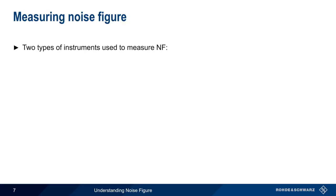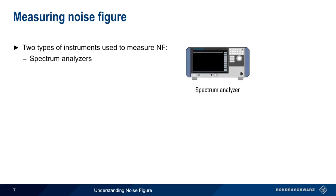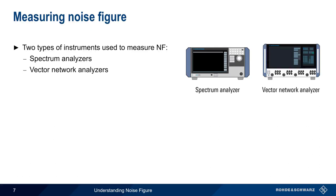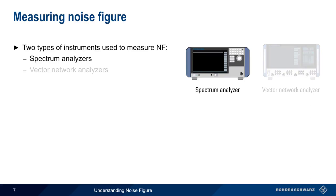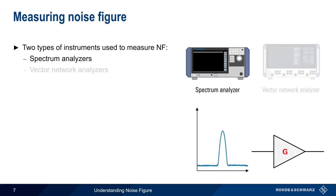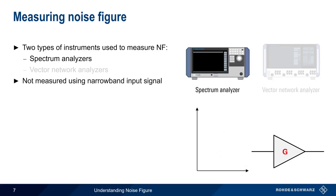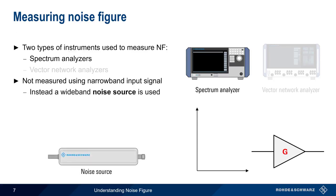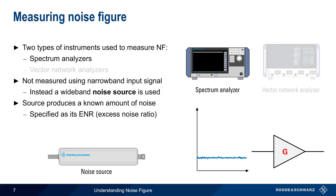Two different types of instruments are commonly used to measure noise figure, namely, spectrum analyzers and vector network analyzers. These instruments usually measure noise figure in different ways, and in this presentation, we'll only be covering how noise figure is measured using spectrum analyzers. Another important consideration in measuring noise figure is the DUT input signal. In our earlier explanation of noise figure, we used a narrowband signal, but this type of narrowband signal is not used when measuring noise figure. Instead, a special device called a noise source is used. This source produces a known level of wideband noise, which is used as the DUT input signal. The amount of noise produced by this special source is specified in terms of its excess noise ratio, or ENR.